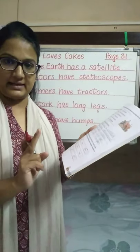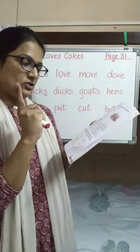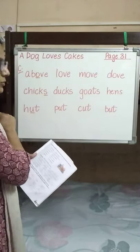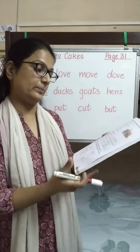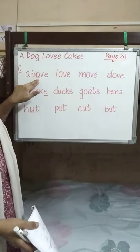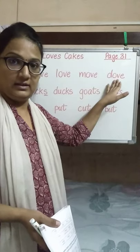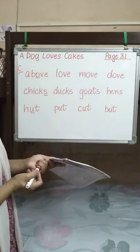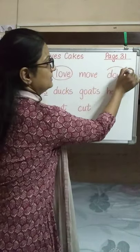Now we will be doing Exercise C. It says: Read these words aloud. One sound in the first word in the box is underlined. Circle the words that have similar sounds in each set. The first set: 'above' — the O is underlined. Similar sounding words are: love, dove. We don't say 'move' the same way — it sounds different. So we will circle: above, love and dove.